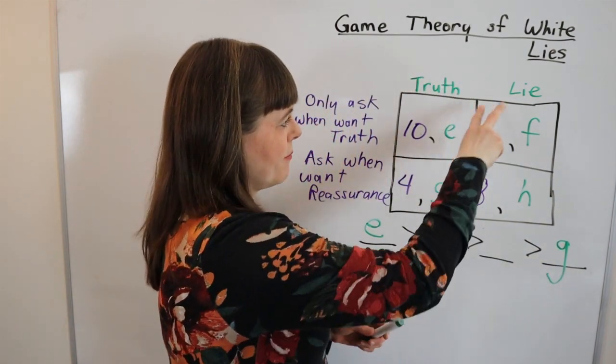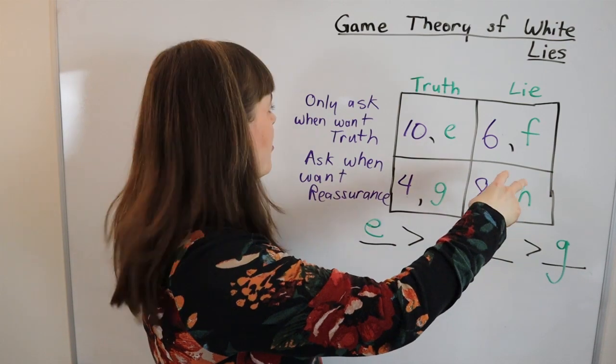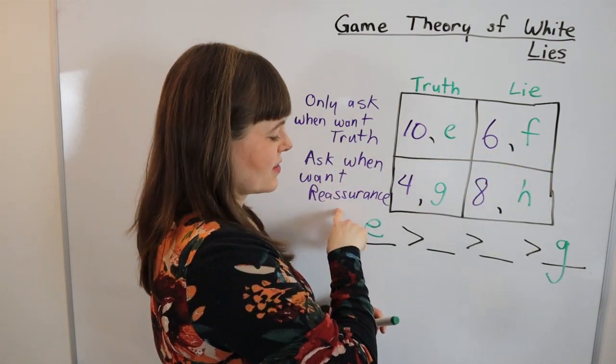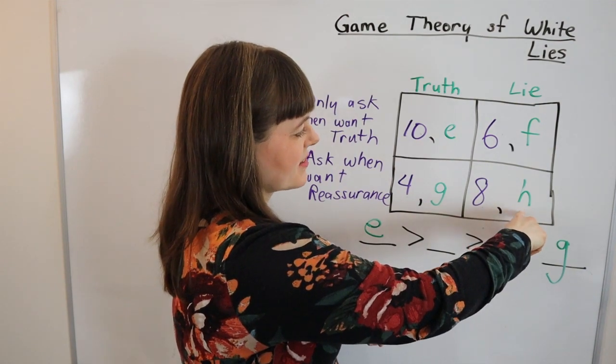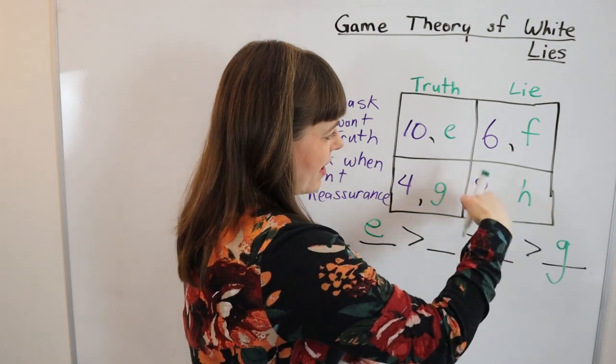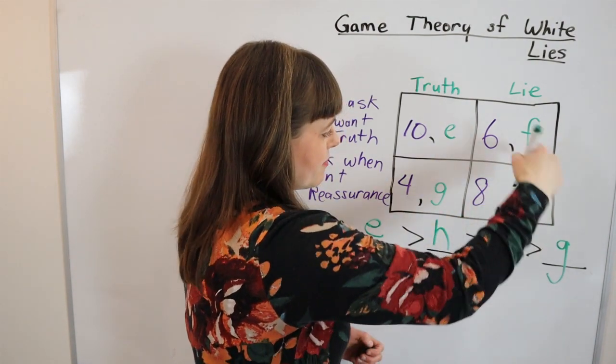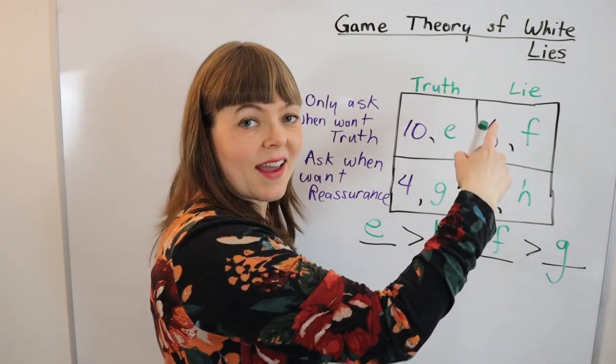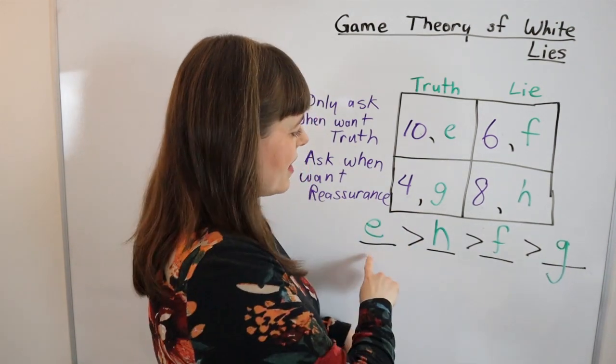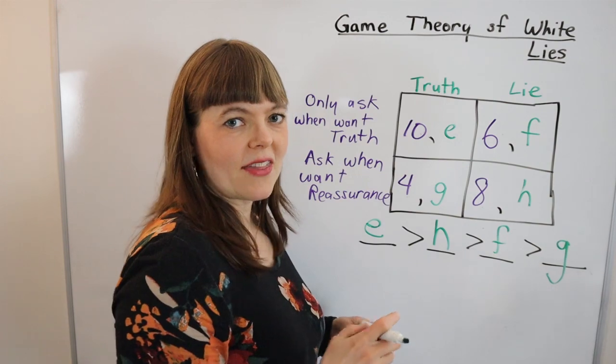And then of course between these two boxes which is better? She only asks when she wants the truth and he lies, or she asks when she wants reassurance and he lies. Well here at least the lie has a purpose. So I'm going to put this box as preferred to this box because up here he's lying and there's really no benefit to him - that just feels kind of icky. So this is my preference ordering and then I'm going to come up with another set of numbers.